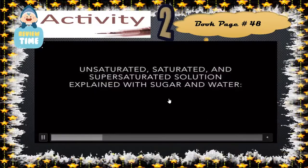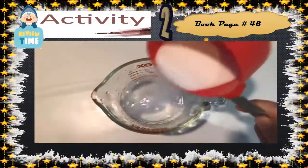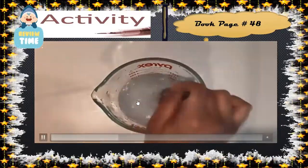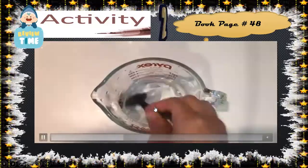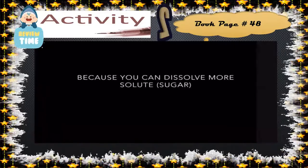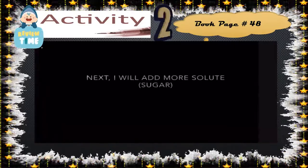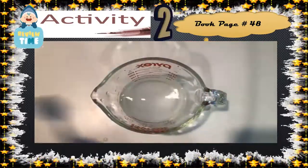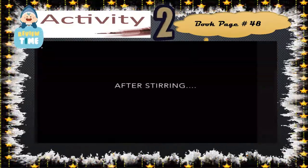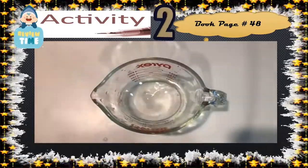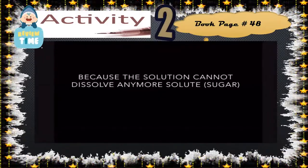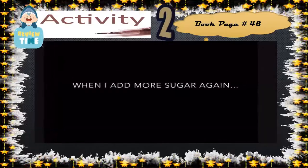In the experiment, we mix sugar and water. When we stir well, we find that all the sugar dissolves completely — that is an unsaturated solution, where the solute completely dissolves in the solvent. If we add more sugar and stir, after some time we find that some sugar crystals remain undissolved. We keep increasing the sugar but it stops dissolving — that kind of solution is a saturated solution.